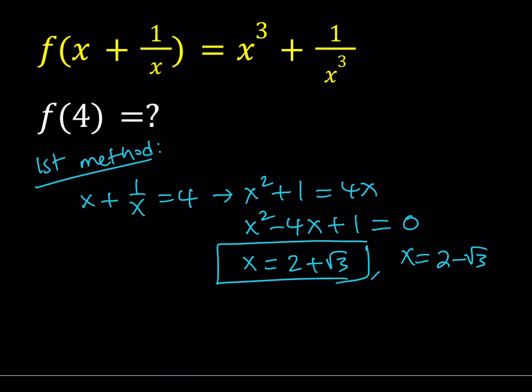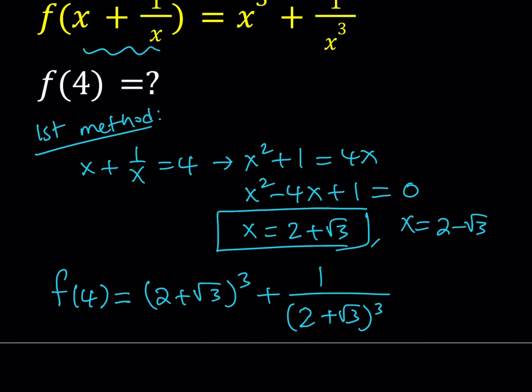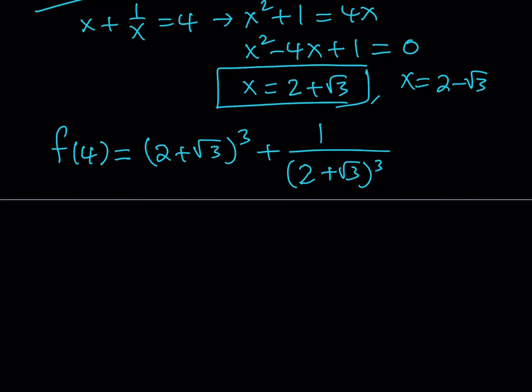And you've got to notice that when I plug in 2 plus root 3, obviously the stuff inside the parentheses is going to equal 4 because that's how we got the x value. So from here, f of 4 is going to equal x cubed, which is 2 plus root 3 cubed, plus 1 over the same thing, right? Obviously if we can evaluate 2 plus root 3 cubed, then we can just plug in its reciprocal and go from there.